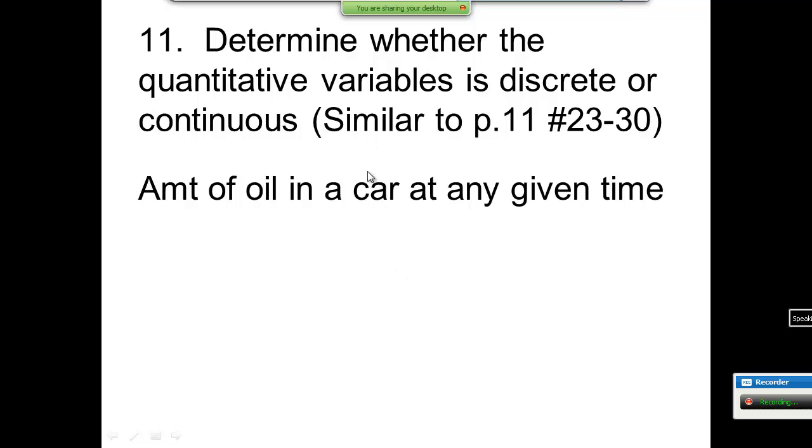Number 11 says determine whether the quantitative variable is discrete or continuous. Amount of oil in a car at any given time: a car may hold 6 quarts total, it may be down some. If you look at how much oil in a car at any given time, it's not maybe exactly 4 quarts, maybe it's 4.2 quarts or 4.23. You can keep measuring it if you had a finer way of measuring it. You can keep putting more decimal places on there. That's continuous - it has decimals.